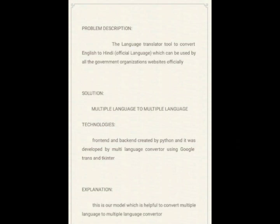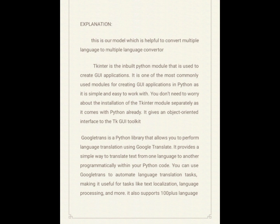Problem Description: the Language Translator Tool to convert English to Hindi official language, which can be used by all government organizations' websites officially. Solution: multiple language to multiple language technology. The frontend and backend are created by Python, developed as a multi-language converter using Google Translate and Tkinter. We use the Python open library for the database and implementation process. The open library resources are Tkinter and Google Trans. Tkinter supports UI creation for translation, and Google Trans supports 100-plus languages.